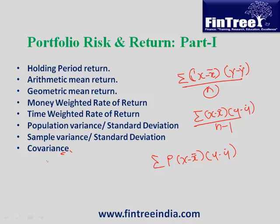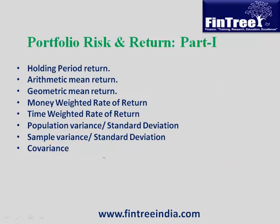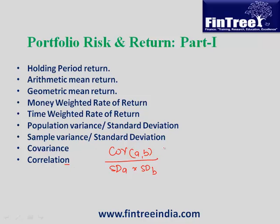An important thing to remember is that the unit of both covariance and variance is always the unit squared — so percentage squared, which is meaningless. To standardize covariance, we calculate the correlation coefficient: covariance between A and B divided by (standard deviation of A × standard deviation of B). The percentage squared cancels out, so correlation has no unit and ranges from minus 1 to plus 1.